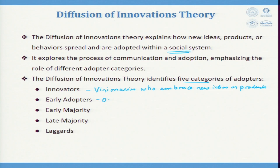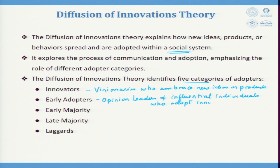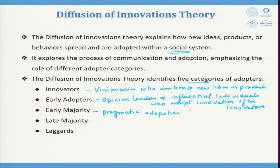Early adopters are opinion leaders and influential individuals who adopt an innovation after the innovator. So the first fellow does it, the next fellow follows. Early majority are pragmatic adopters who follow early adopters.